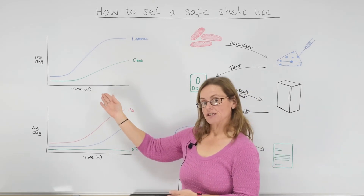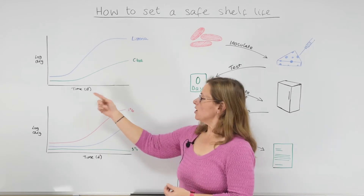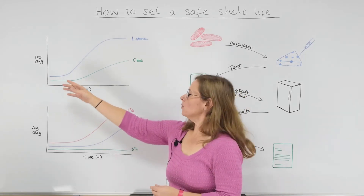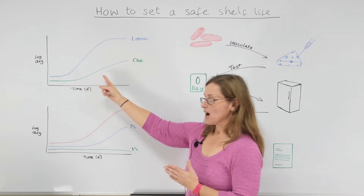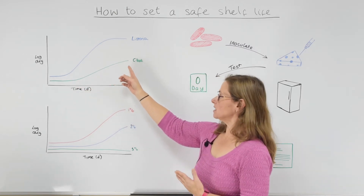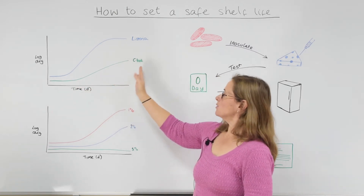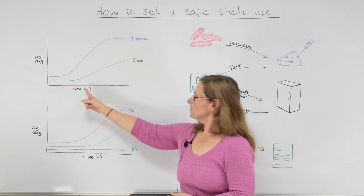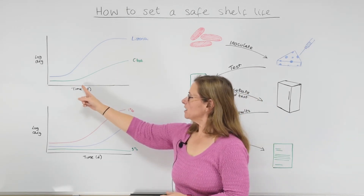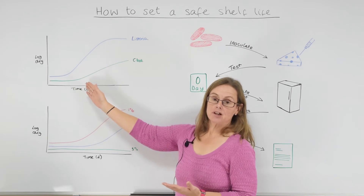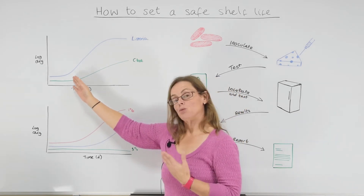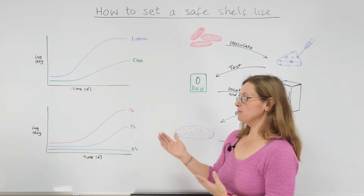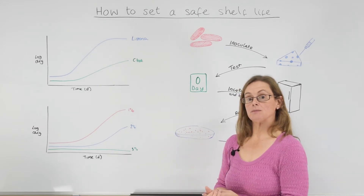So if we take this graph here as an example, we have the time in days and the log count - so what we are looking at is how many organisms grow in a particular time. We have got botulinum and listeria as examples. So your shelf life might be here - you can say perhaps botulinum wouldn't grow but listeria would grow within your shelf life, so therefore listeria might be the organism that limits your life.